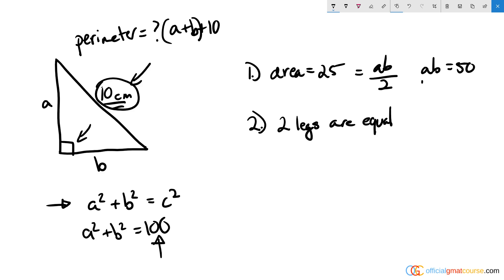There are multiple scenarios for a and b that could multiply to give 50: it could be 1 times 50, 2 times 25, 5 times 10, etc.